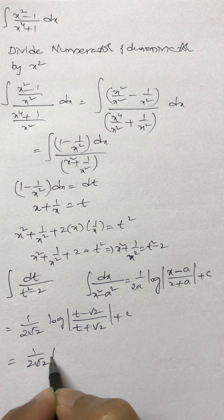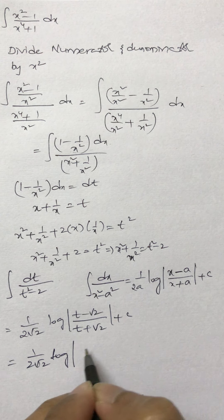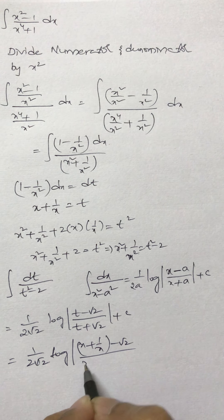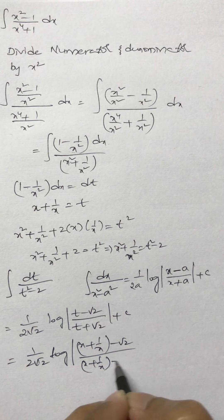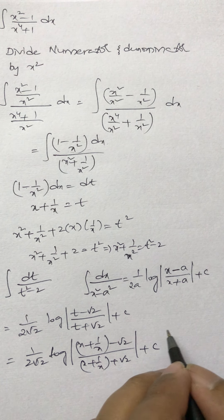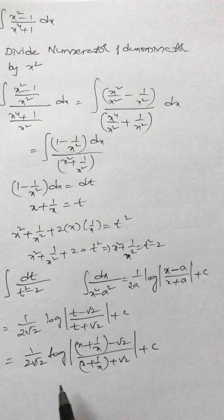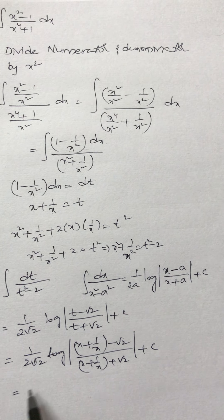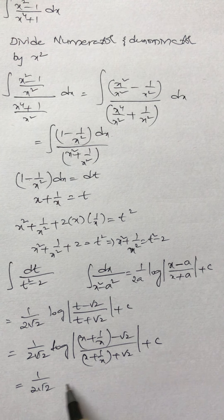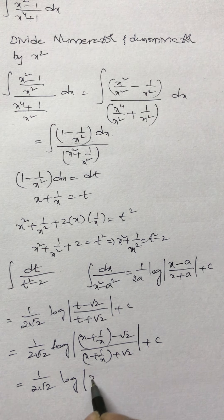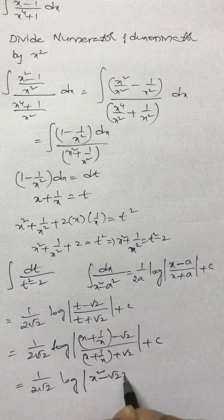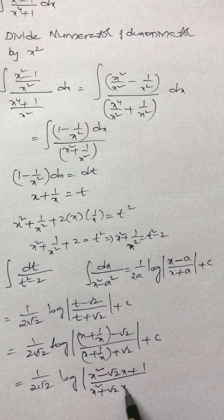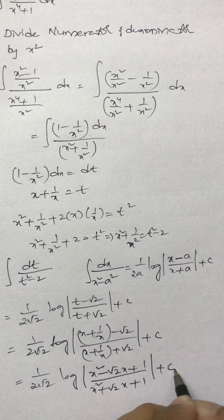Now substituting back t = x + 1/x, we get (1/(2√2)) log|(x + 1/x - √2)/(x + 1/x + √2)| + C. Simplifying one more step: (1/(2√2)) log|(x² - √2·x + 1)/(x² + √2·x + 1)| + C.